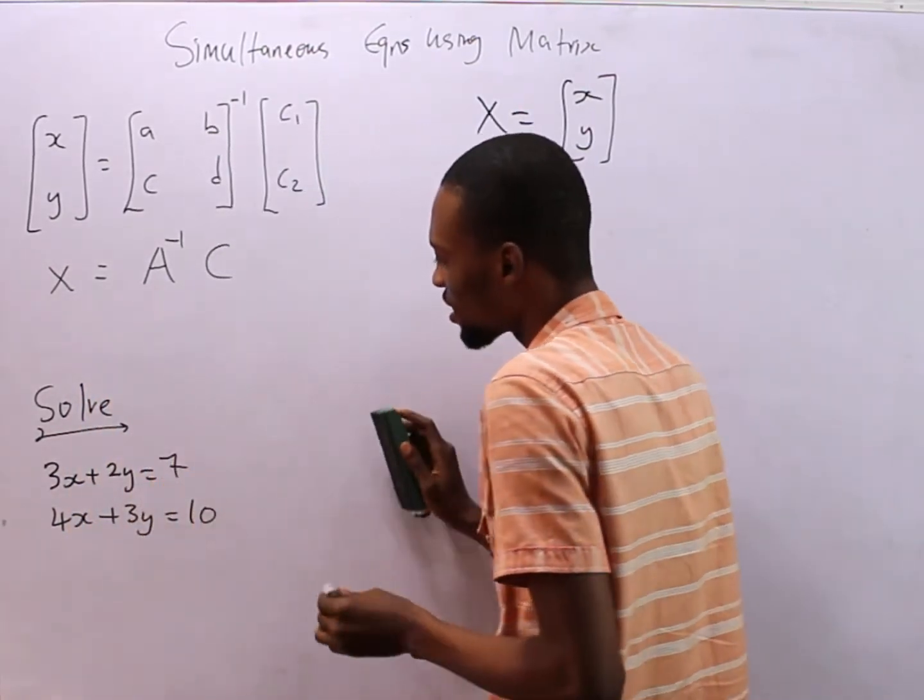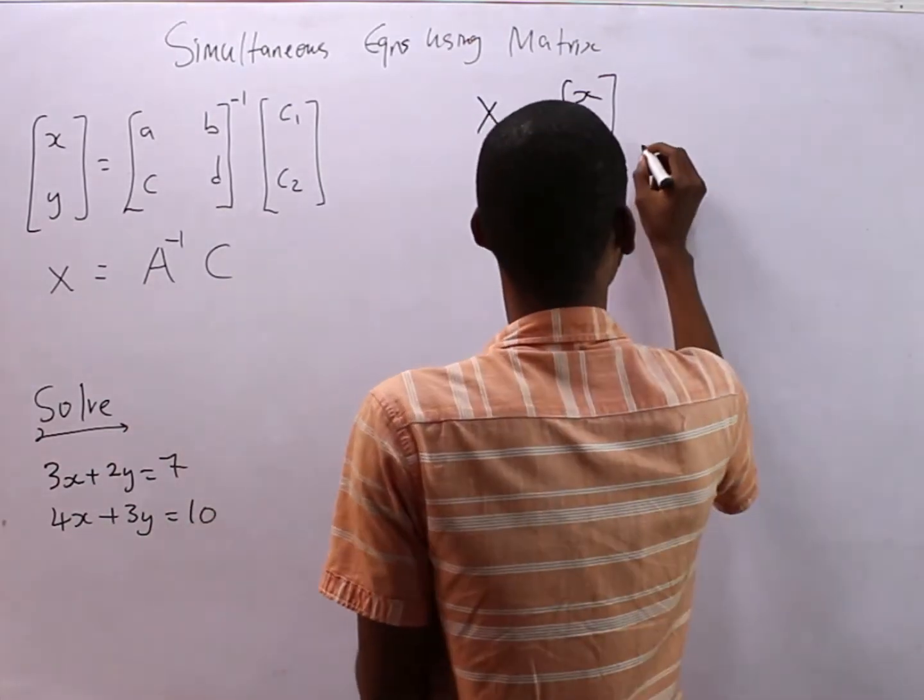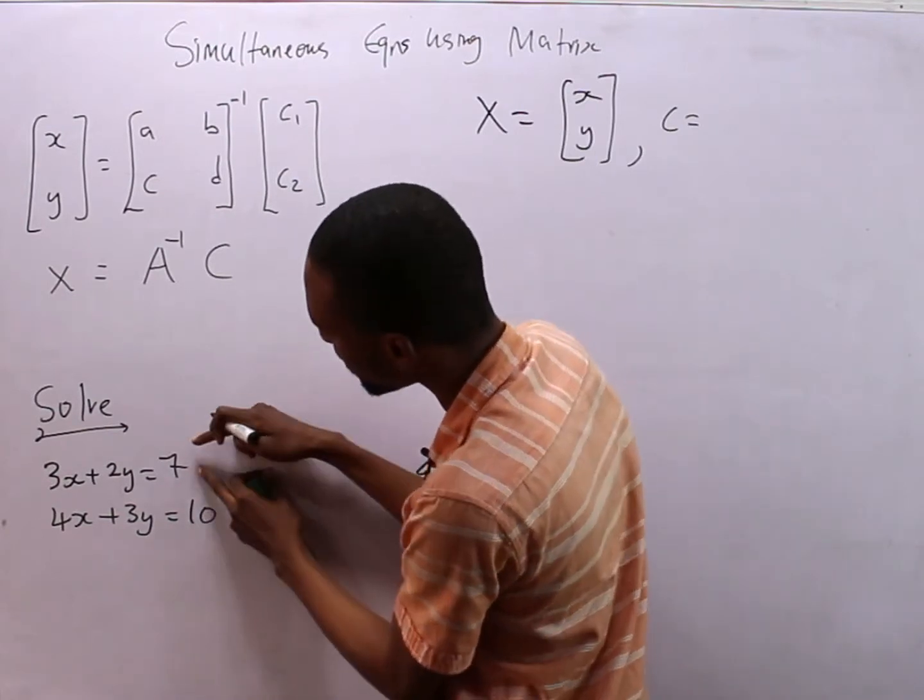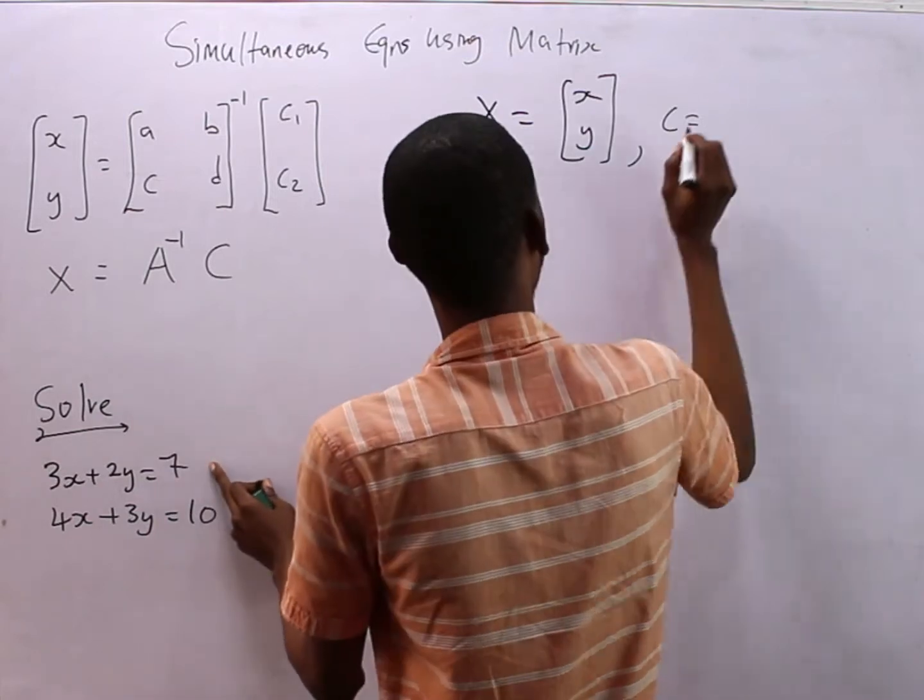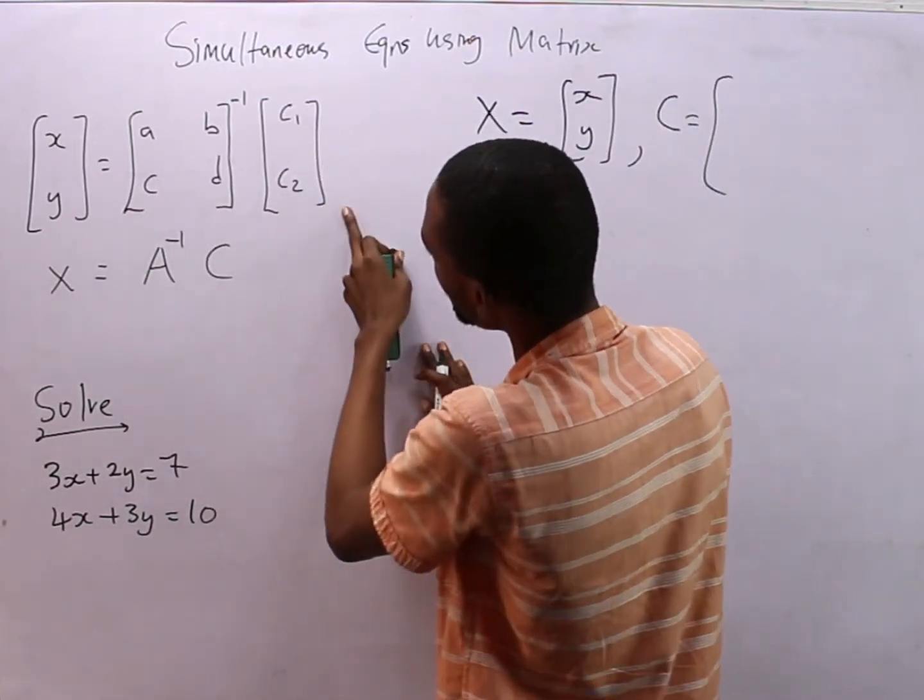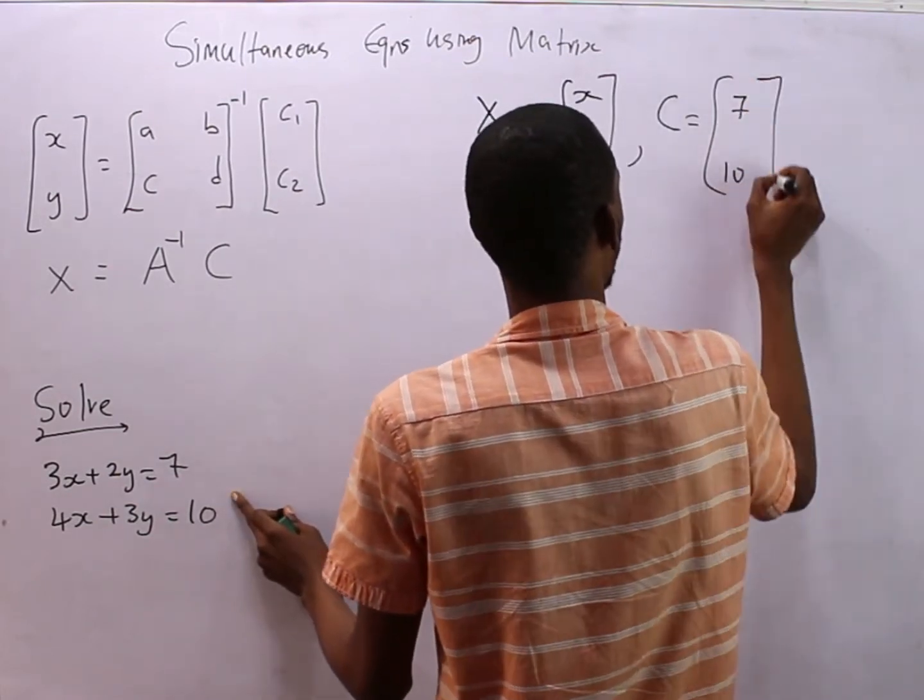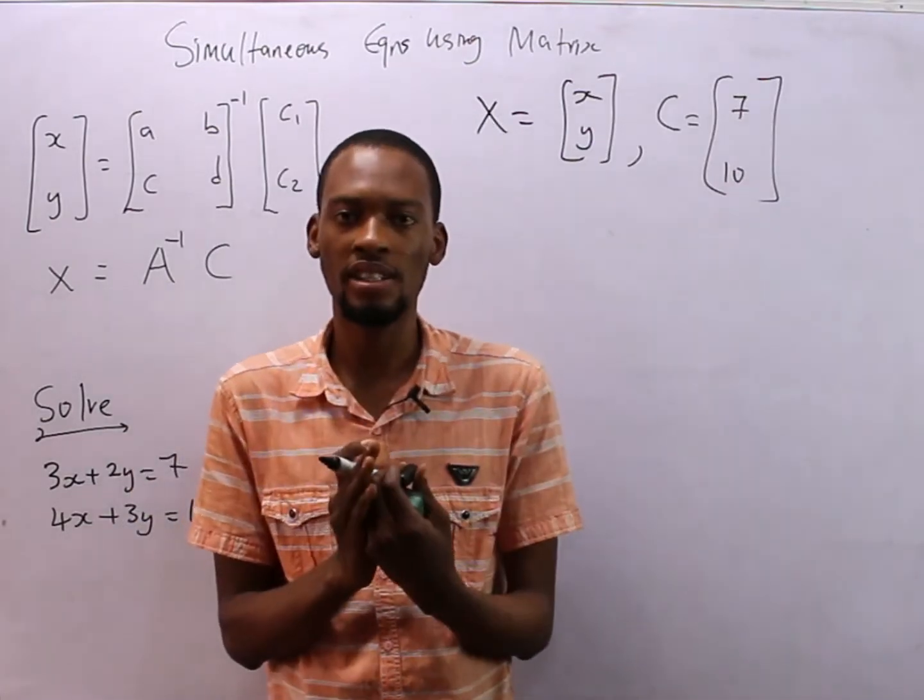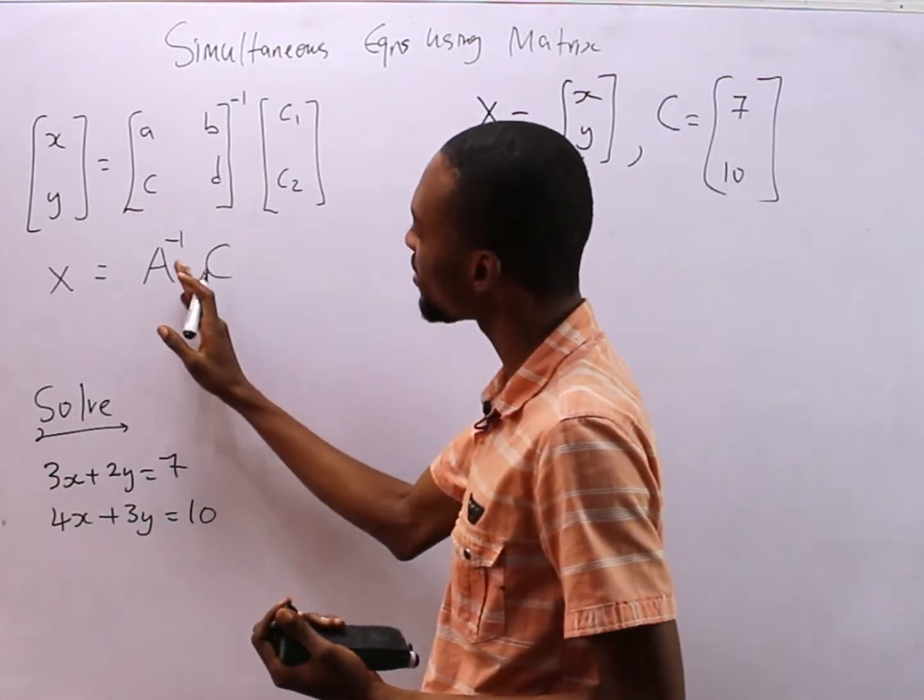Having understood that, how do we get C? C is simply the stuff that are here. C1 is this first guy and C2 is the second one. So C1, capital C is the same thing as c1, c2 which is 7 and 10. So we've gotten C.